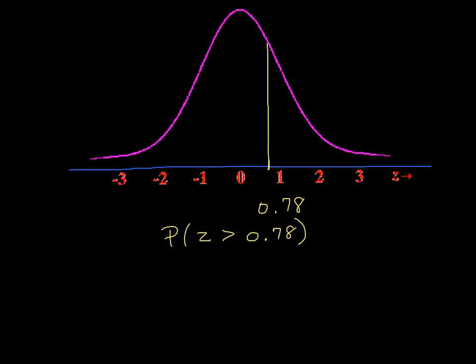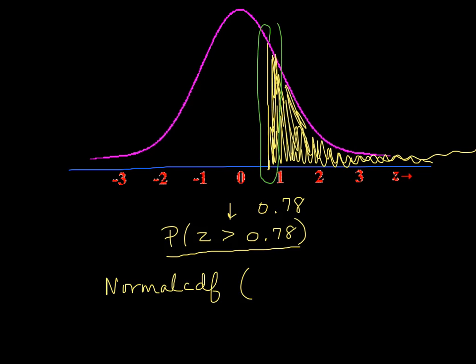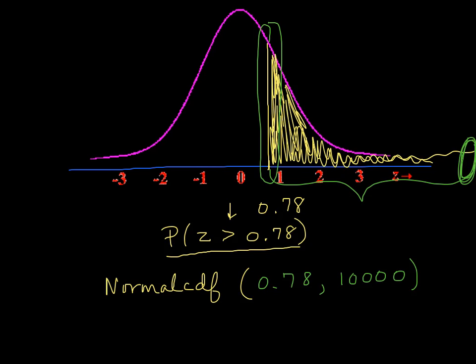Let's look at another example with a standard normal curve. This time we have a positive z-score of 0.78. I'm looking for the probability of having a z-score greater than 0.78, which means the area from 0.78 all the way to the right — going to infinity. So I'll use normal CDF. We always use CDF, never PDF. My leftmost boundary of that yellow area is 0.78, then a comma, and my rightmost boundary is 10,000 to represent positive infinity. Close the parentheses.